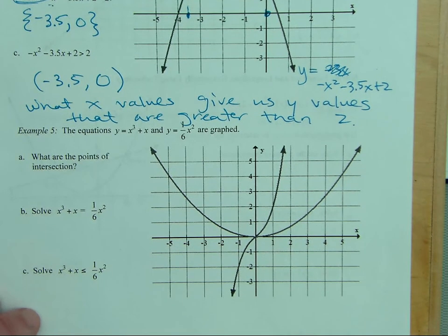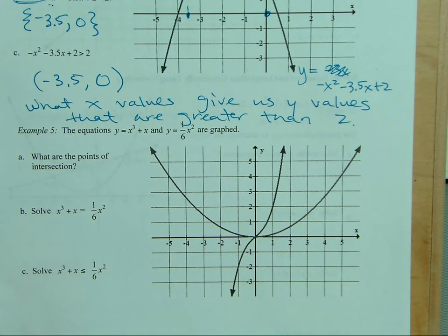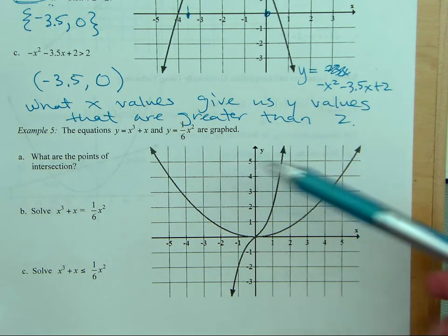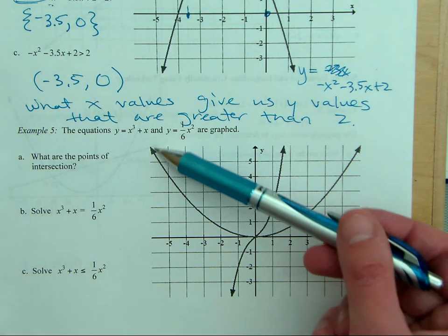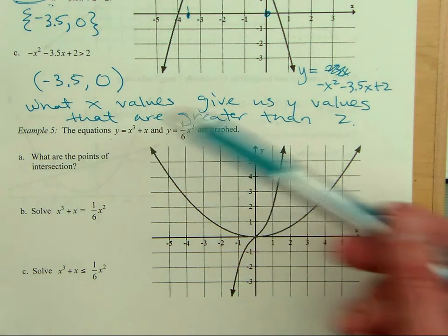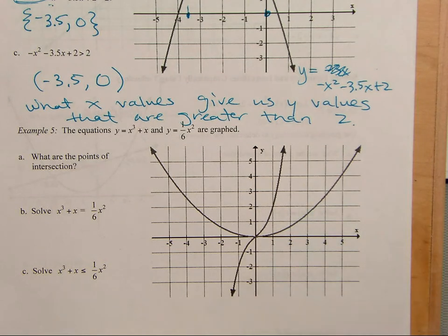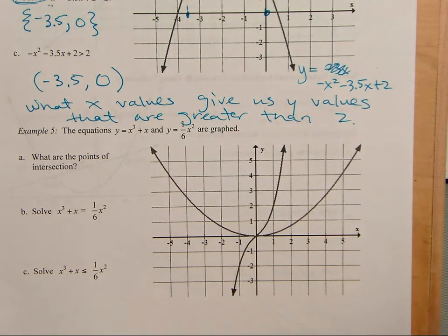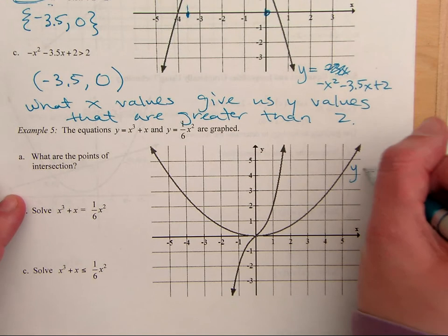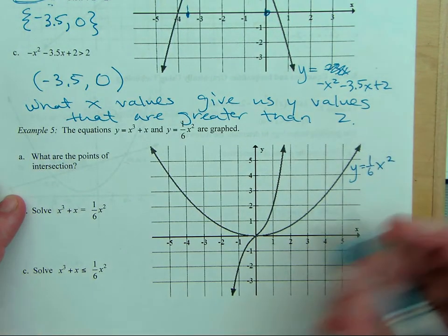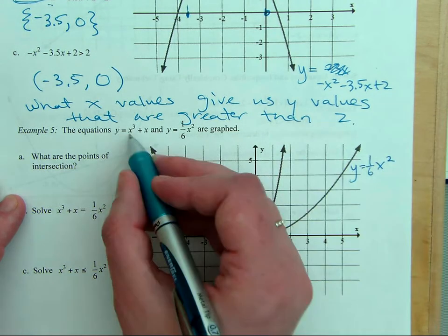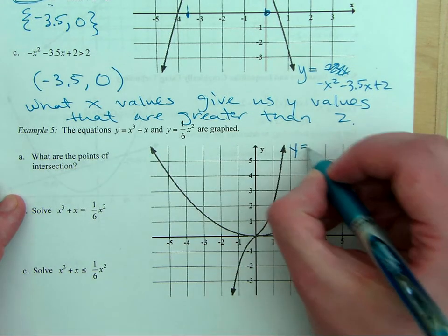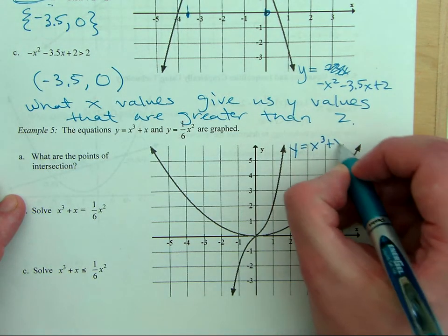So, do you have any idea which is which? In terms of which equation would give us this shape and which equation would give us the shape? Well, we know that the parabola is always x squared. So, this one has to be y equals 1/6 x squared. And then this shape here would have to be the cubic function, y equals x cubed plus x.